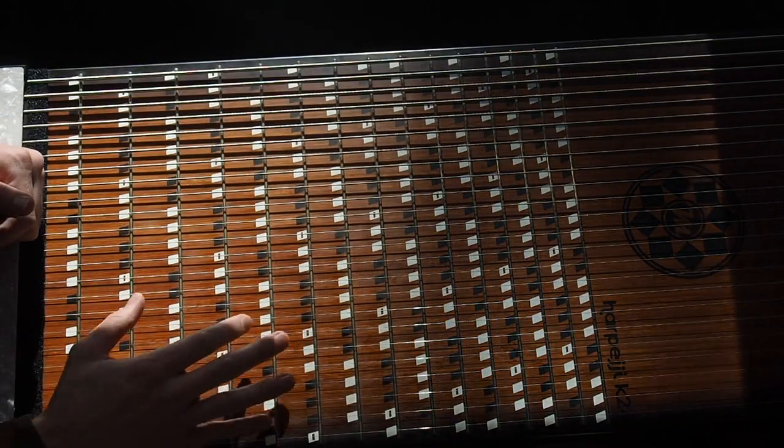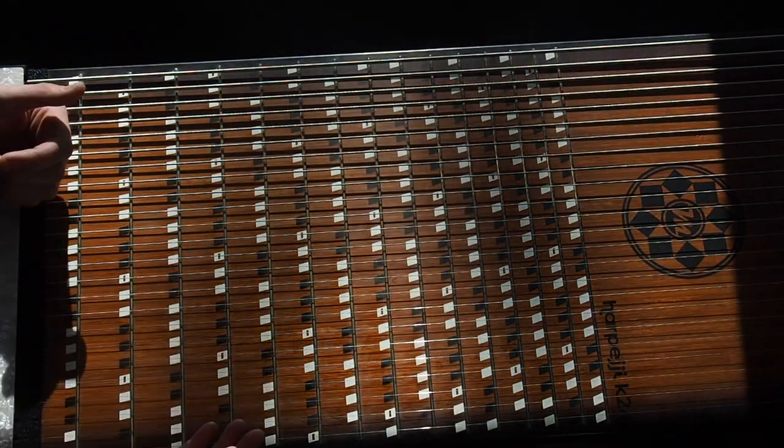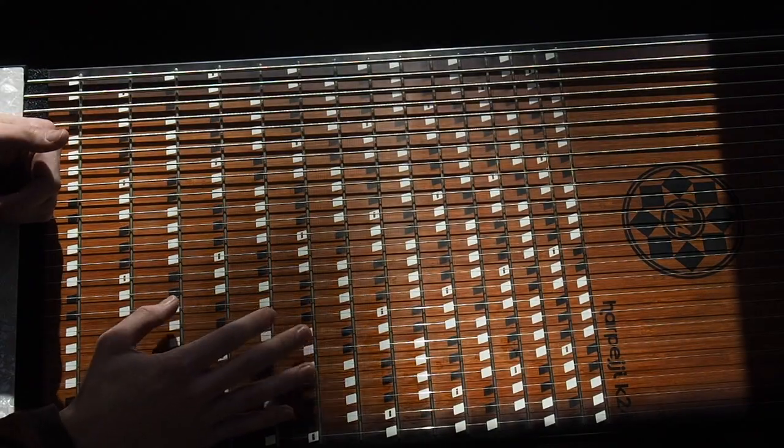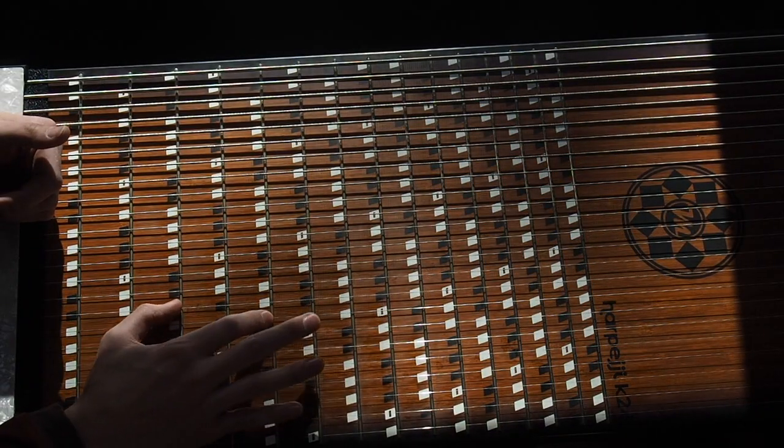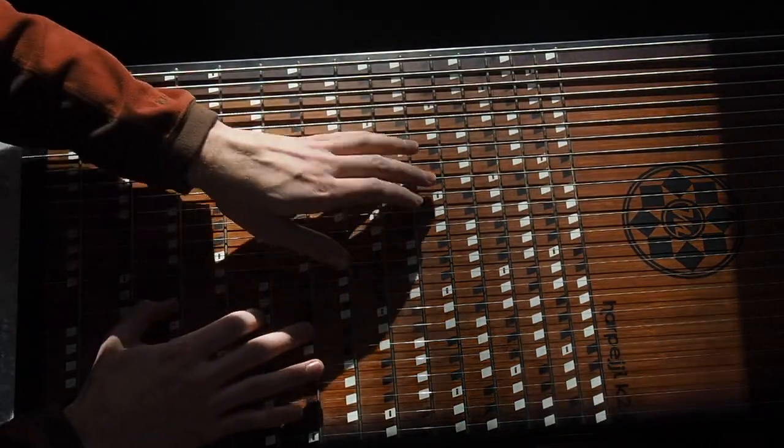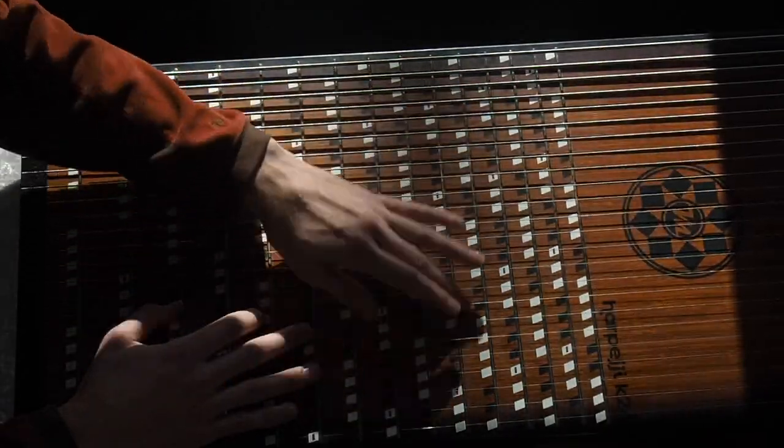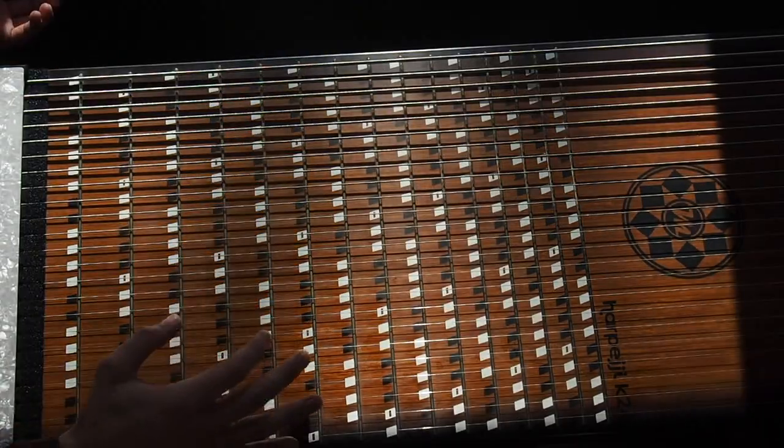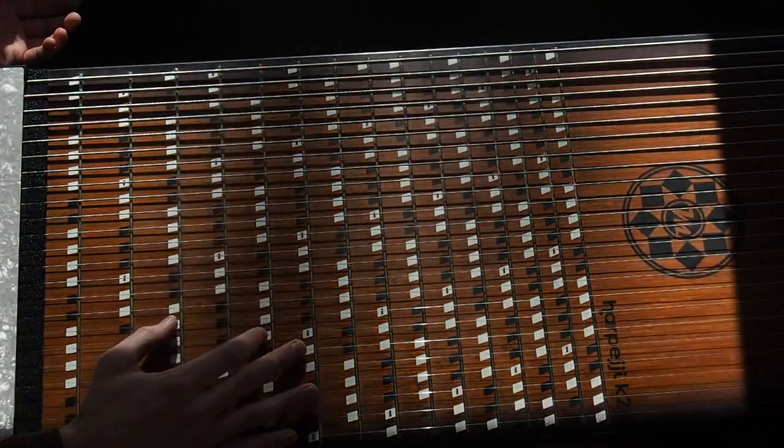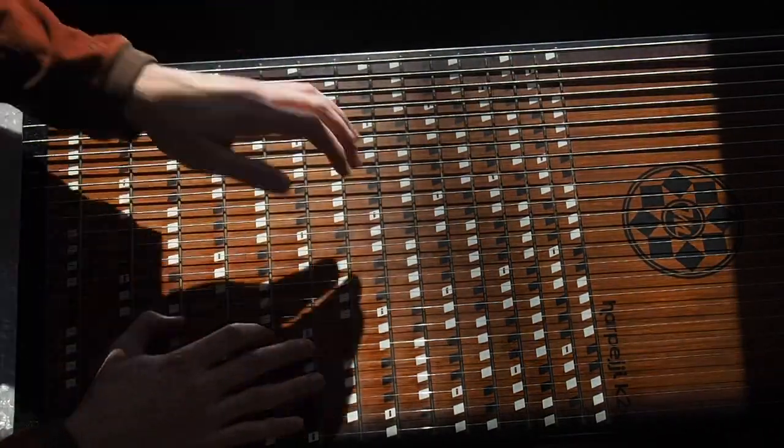What I really like about strumming on the harpeggi is that it's very easy to find different chord shapes. So like here I'm playing an F major chord, and then if I want to go to a different chord, for the sake of this video we'll go to a G, I can just move that pattern.